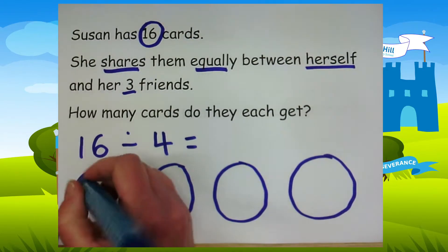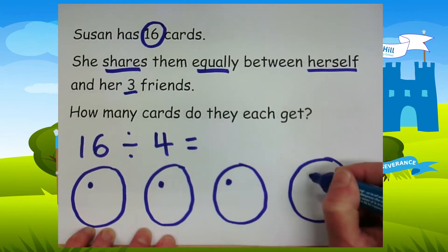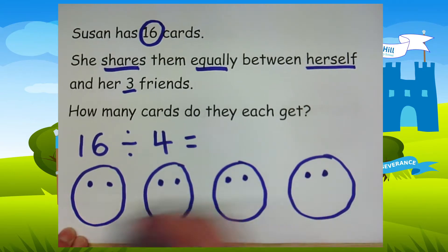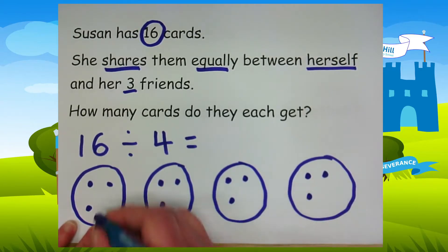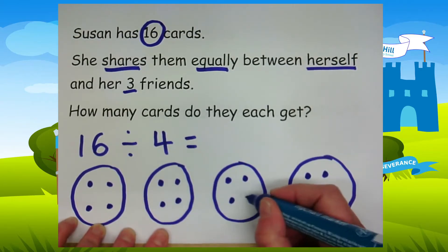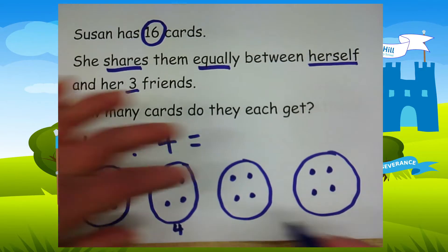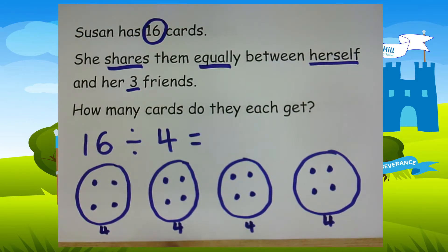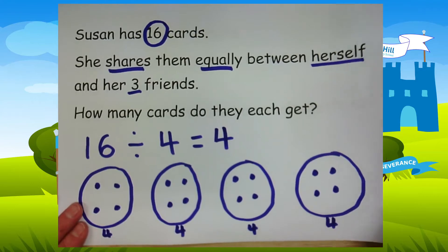I'm going to put the equal amounts in each sharing circle. One, two, three, four, five, six, seven, eight, nine, ten, eleven, twelve, thirteen, fourteen, fifteen, sixteen. Oh, I can see that each of my sharing circles has got four in. So I know sixteen shared between four is four. They each get four cards.